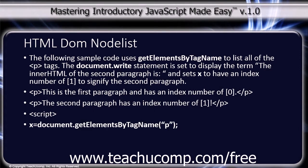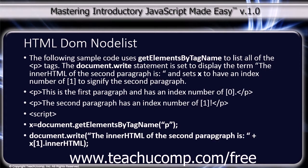The JavaScript code is: x = document.getElementsByTagName('p'); followed by document.write('The innerHTML of the second paragraph is: ' + x[1].innerHTML); and finally the closing script tag.